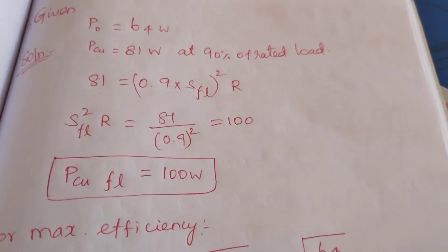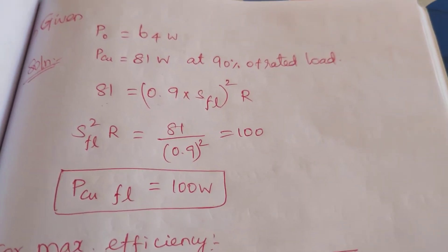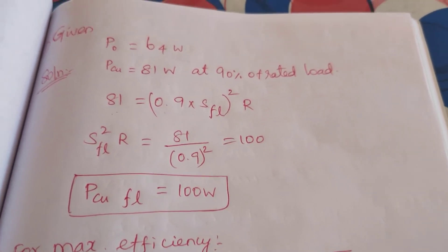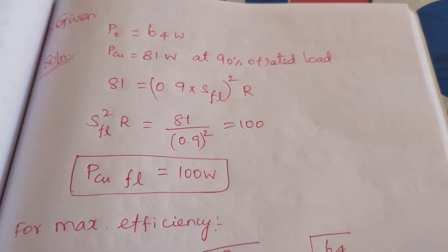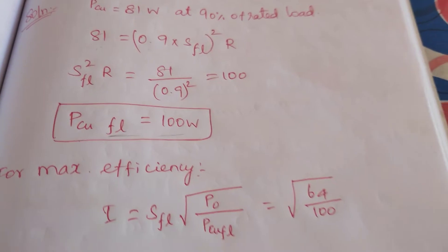Total copper loss for maximum efficiency is 100 watts. At 90 percentage load, 81 watts. So full load we will get 100 watts.